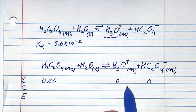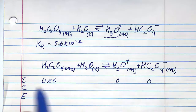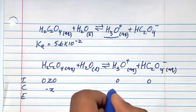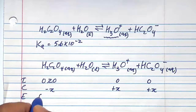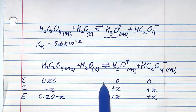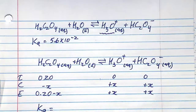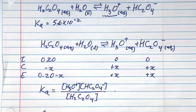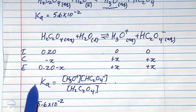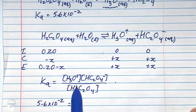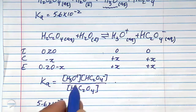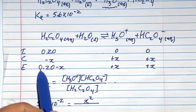We start off with 0.20 molar of oxalic acid initially, and zero of the products. We want to find these at equilibrium. As the reaction proceeds, some acid dissociates, producing the proton and conjugate base, giving us −X, +X, and +X in the change row. At equilibrium: 0.20 − X for the acid, and X for each product. The Ka expression is products over reactants, excluding liquids: Ka = X² / (0.20 − X).